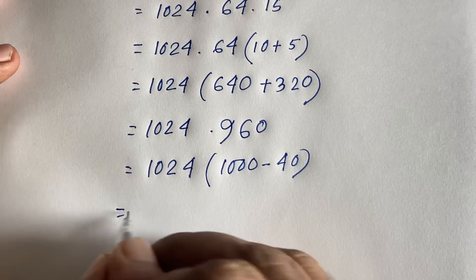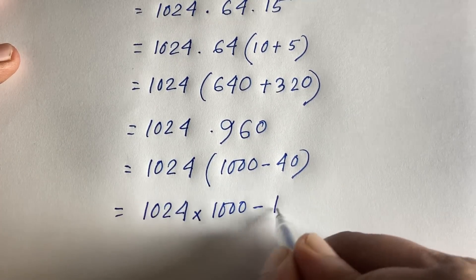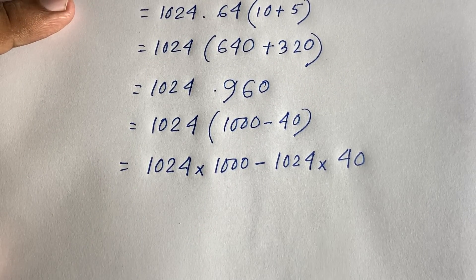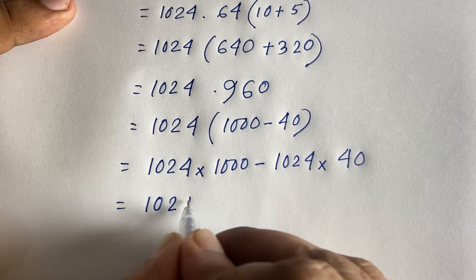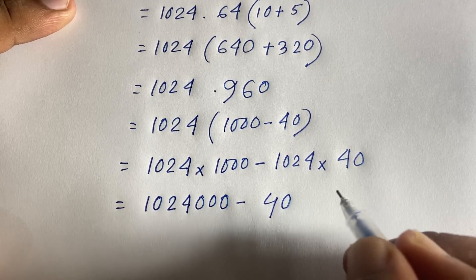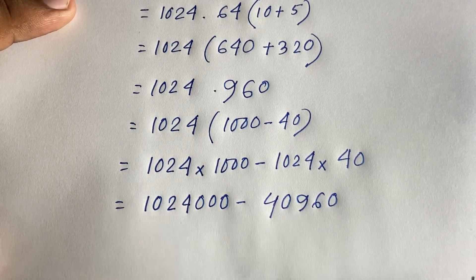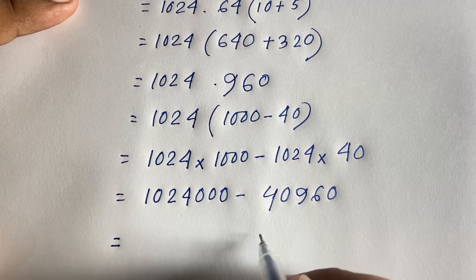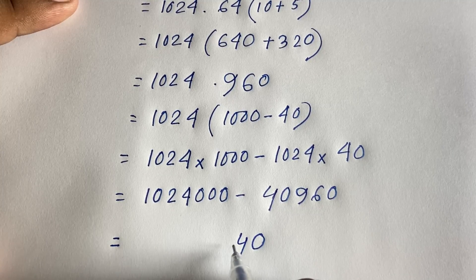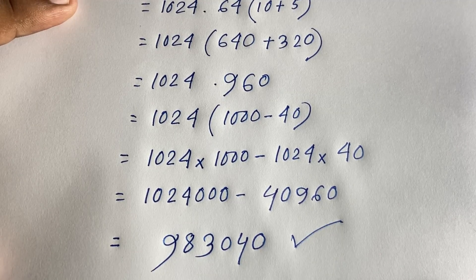Expanding: 1024 times 1000 equals 1,024,000, and 1024 times 40 equals 40,960. Subtracting: 1,024,000 minus 40,960 gives us 983,040. This is our final answer to the maths question.